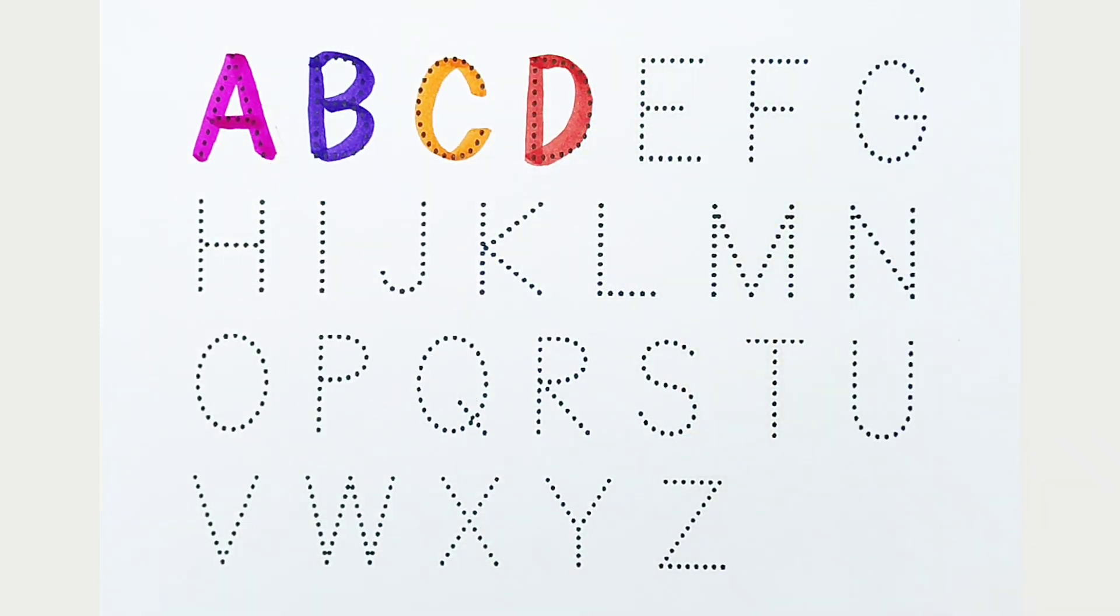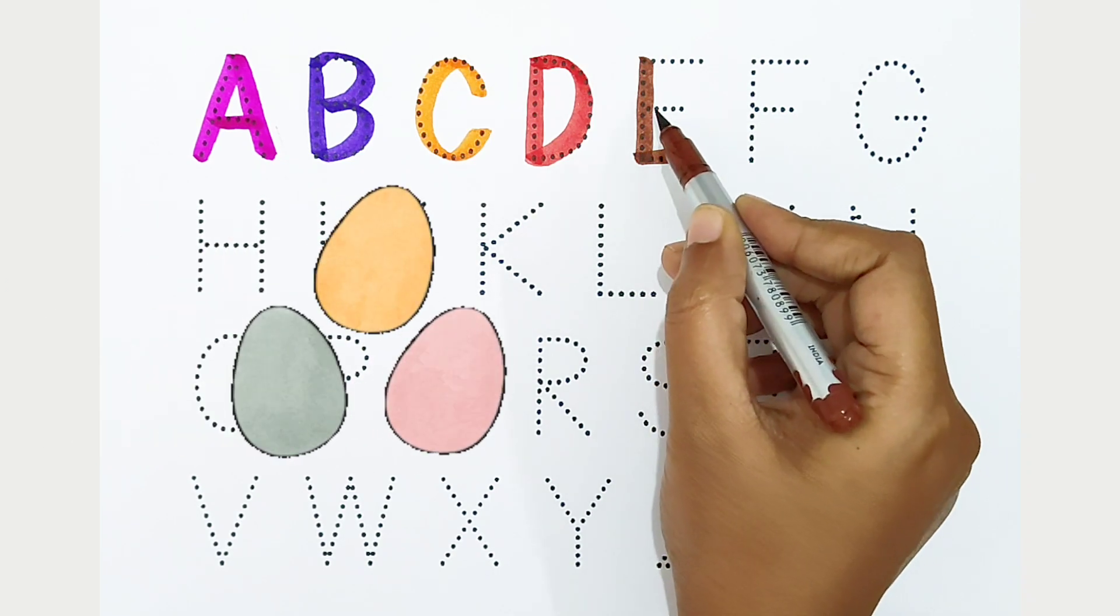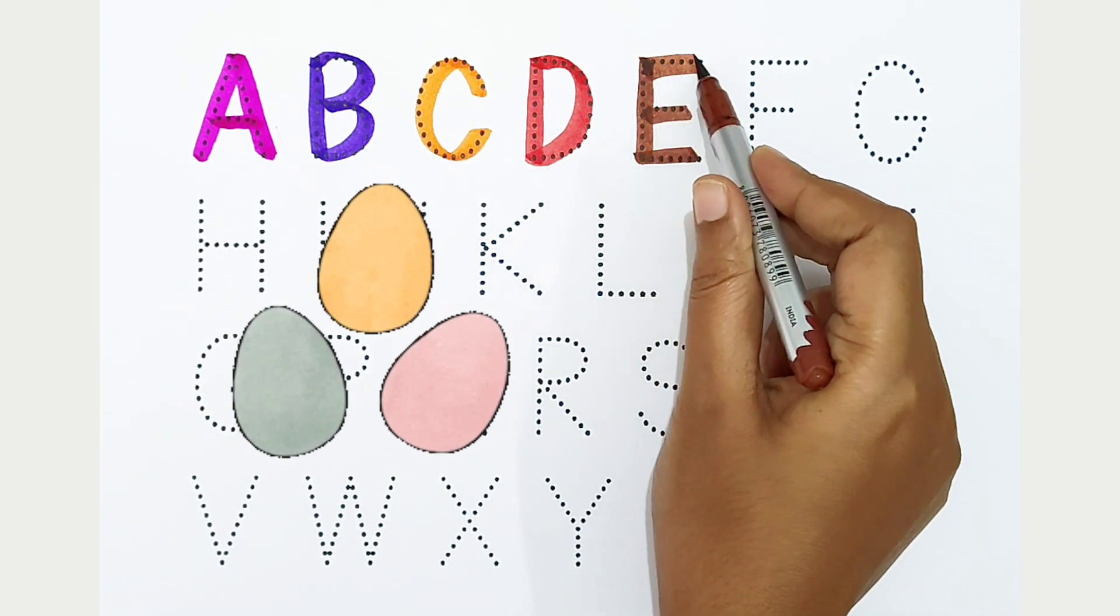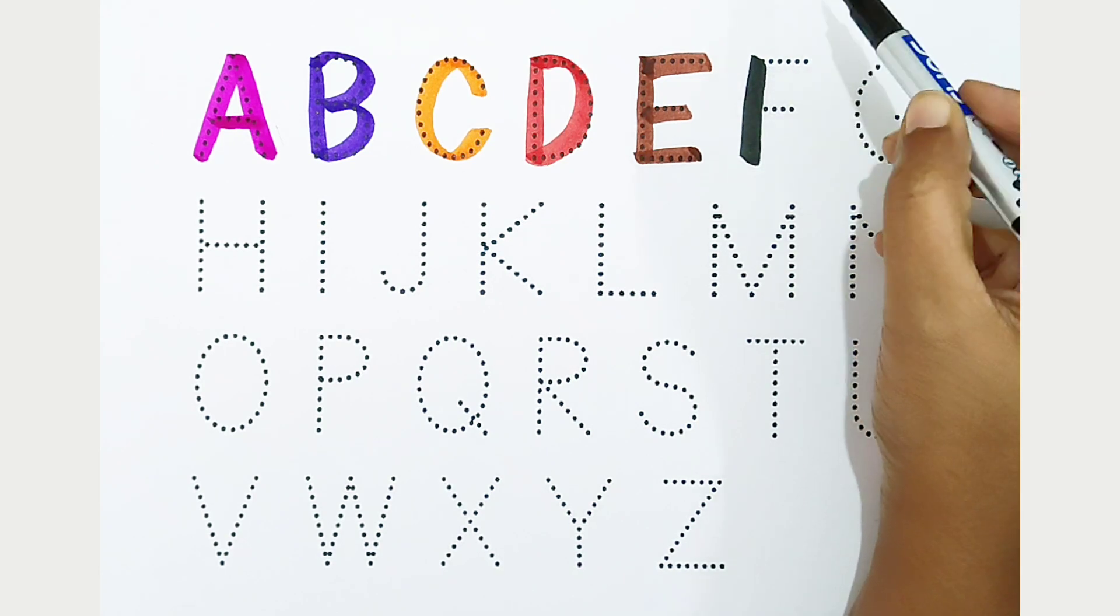D, red color. D is for donkey. E, brown color. E is for egg. F, black color. F is for fish.